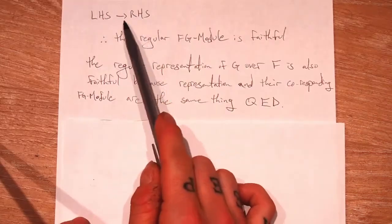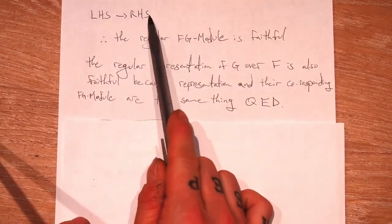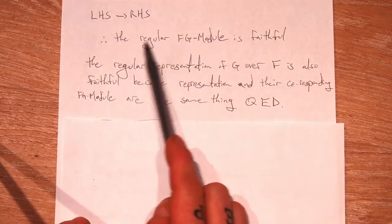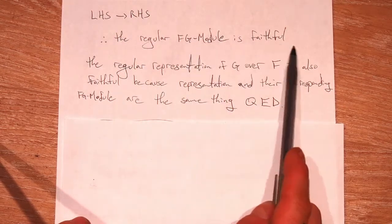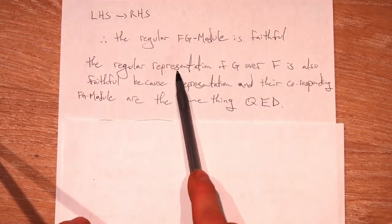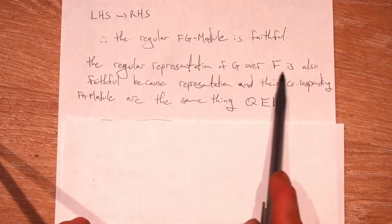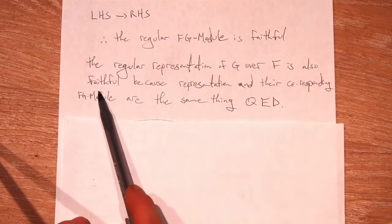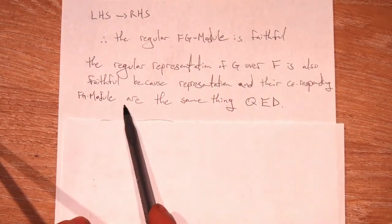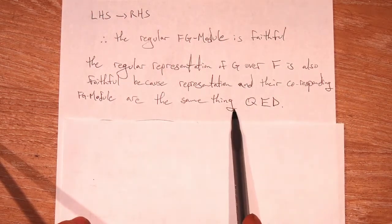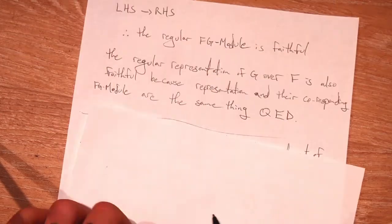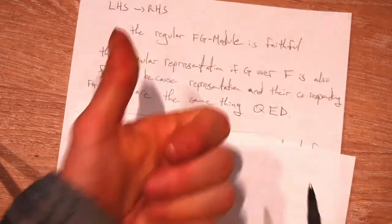So then we have that the left-hand side implies the right-hand side. So both sides imply each other, and we see that the regular FG module is indeed faithful. The regular representation of G over F is also faithful because representations and their corresponding FG modules are the same thing. QED.